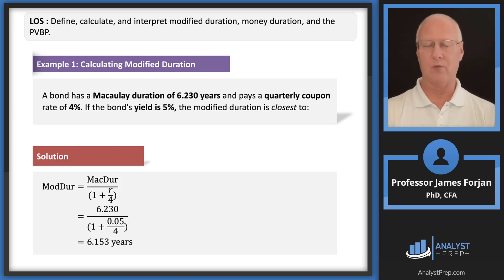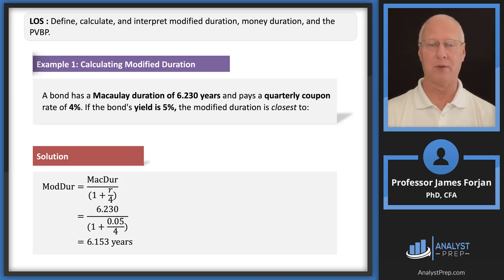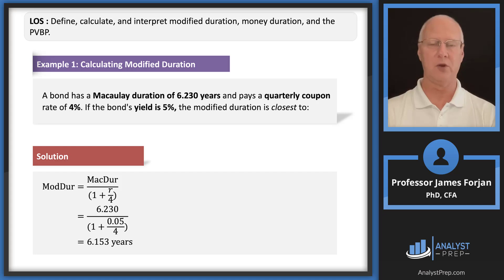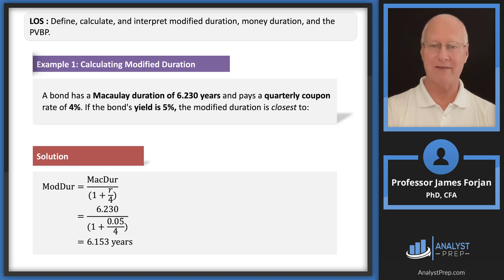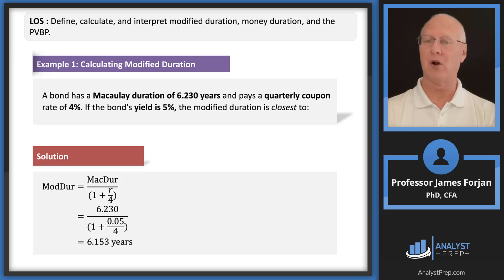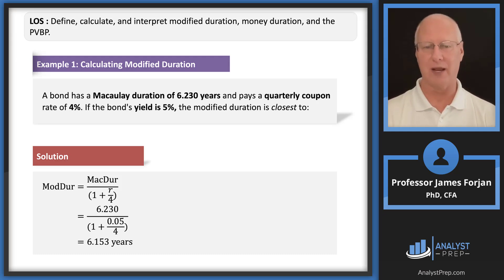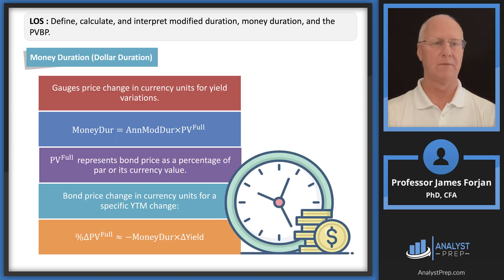Notice what we're doing with modified duration: all we're doing is dividing by one plus an interest rate. Think of modified duration as a present value of the Macaulay duration — it's always going to be just a little bit less, depending on the absolute value of the yield to maturity.